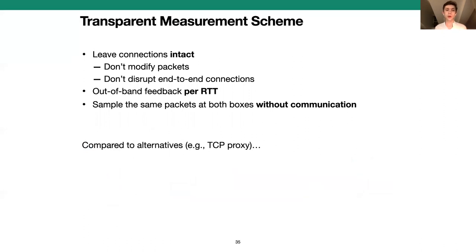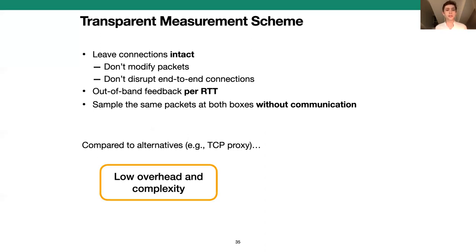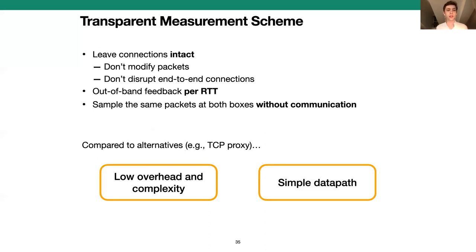Compared to alternative approaches — for example, using a TCP proxy which would terminate the end-to-end connections and send packets over its own pool of connections — our scheme has several benefits. First, it requires significantly less overhead and complexity: we only need to maintain state and add feedback on the order of one packet per RTT rather than all in-flight packets. Second, the data path functionality is far simpler — we only need to compute a single hash per packet in the data path, and the control functionality executes off the data path. In contrast, a TCP proxy needs to implement reliability in the data path.